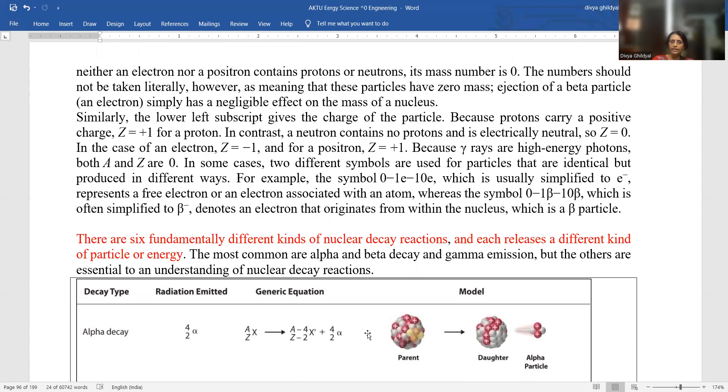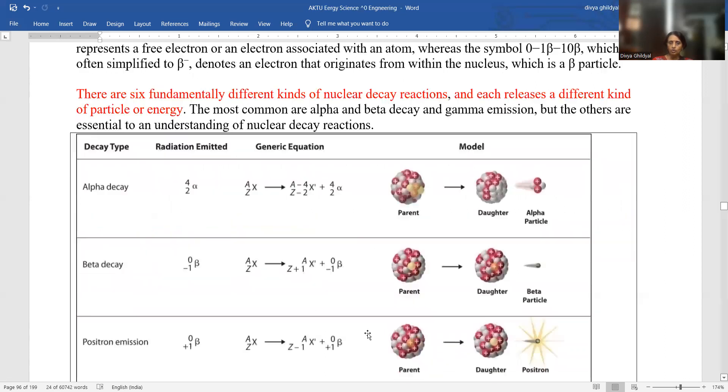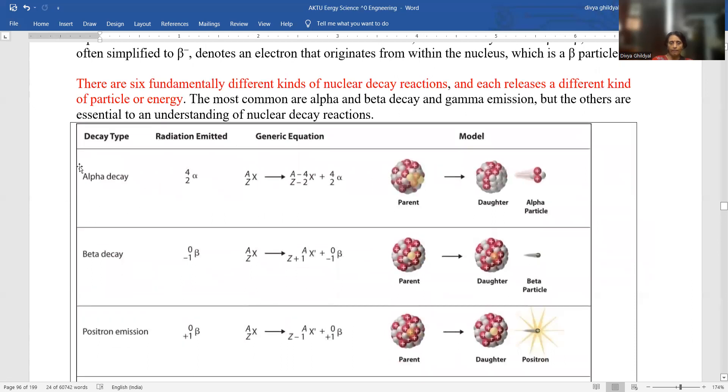There are six fundamentally different kinds of nuclear decay reactions and each of them releases a different kind of particle or energy. Most common ones you must have heard in radioactivity: alpha, beta and gamma emission, but others are also there. Look here, this you have to memorize. Alpha decay, 4 and 2. That means a change in mass number of 4 and atomic number 2 will take place when an alpha particle is emitted.